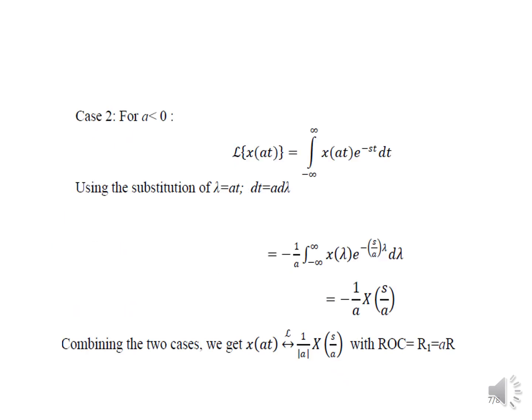For the second case, a < 0: we evaluate X(at) as the integral from −∞ to ∞ of X(at)·e^(−st) dt. By substituting λ = at, so dt = dλ/a, substituting all values and rearranging the equation, and taking the constant outside, we obtain −(1/a)·X(s/a). Therefore, combining the first case (positive) and second case (negative), we can write the result as (1/|a|)·X(s/a) with ROC equal to R₁ = k·R.